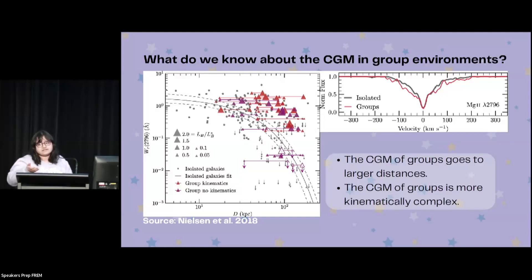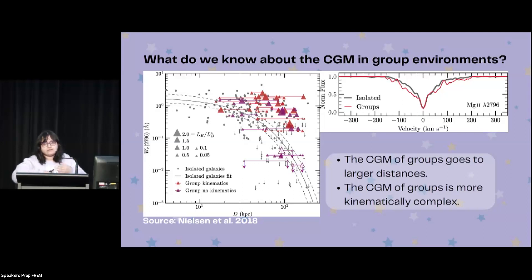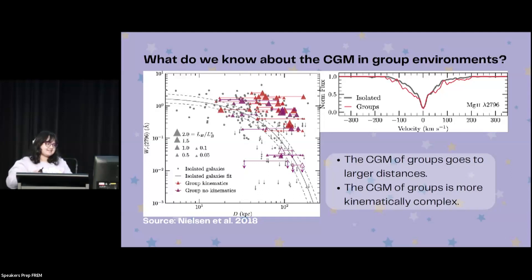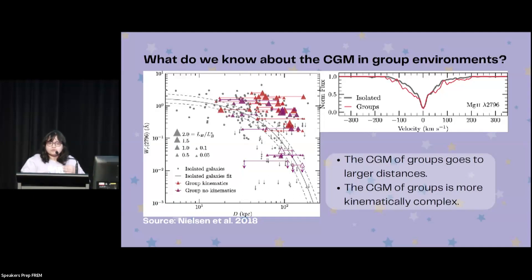Another trend we see commonly is that the circumgalactic medium of group galaxies seems to be more kinematically complex. If we look at the absorption lines in the case of galaxies in group environments, we see that they are wider, which means it is more kinematically complex. But what happens if the galaxies are merging?